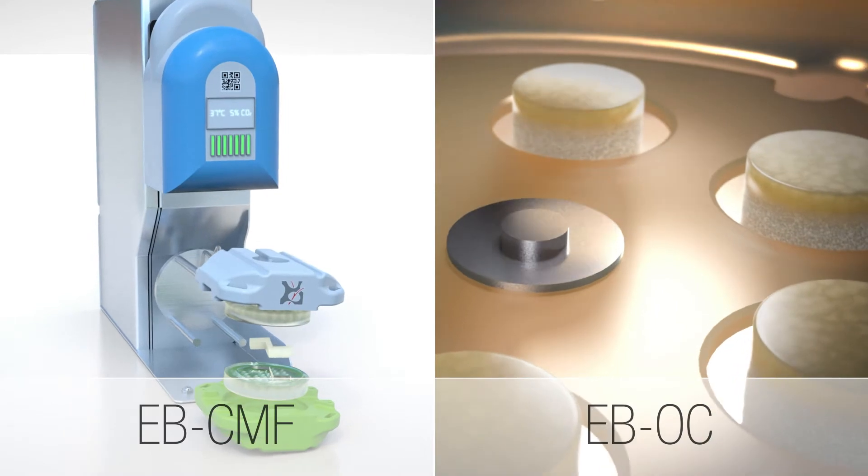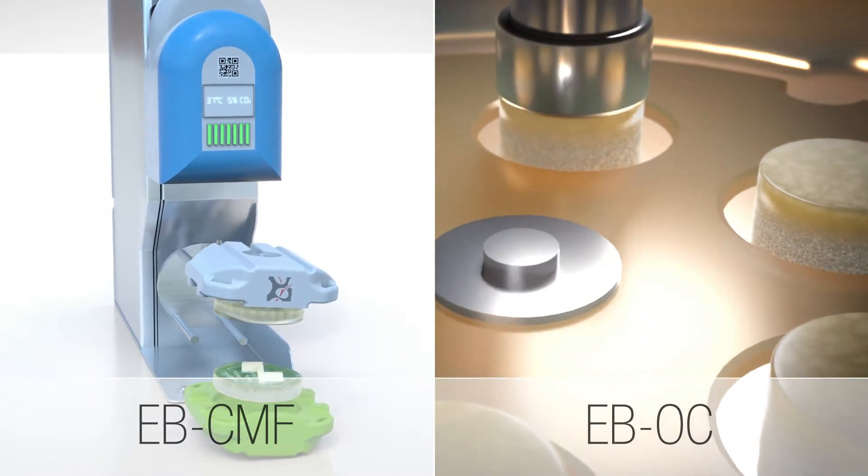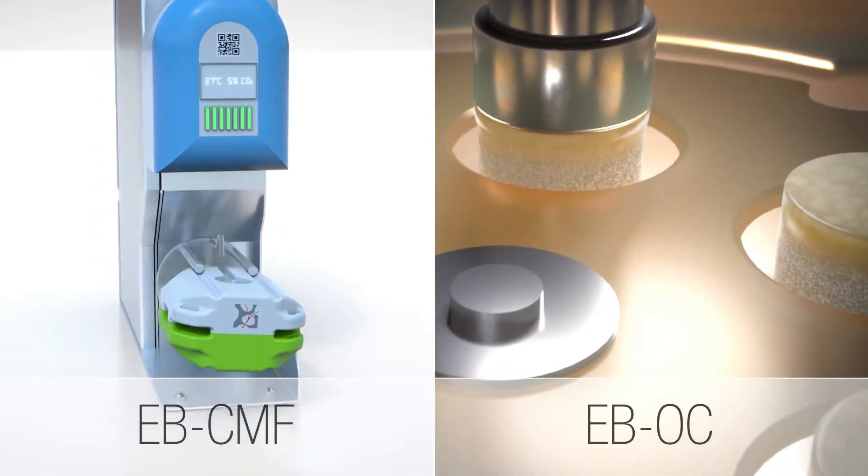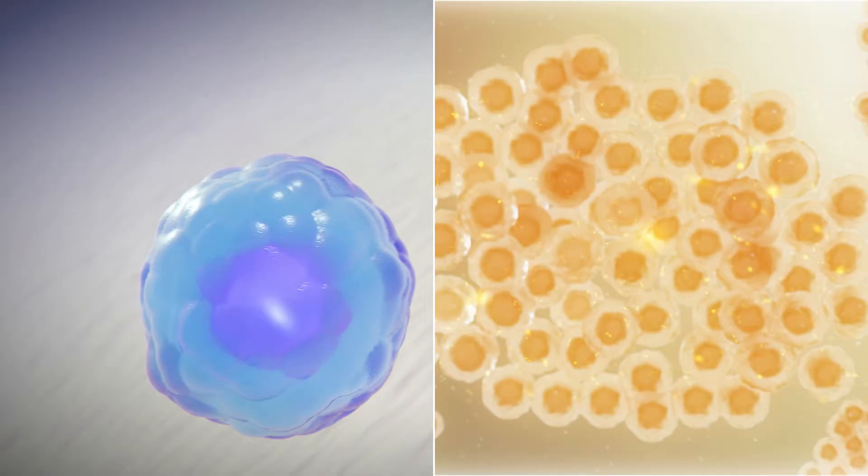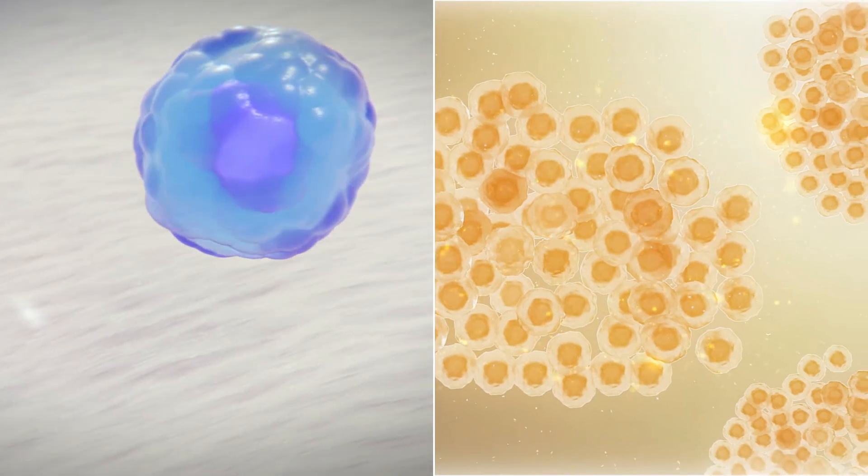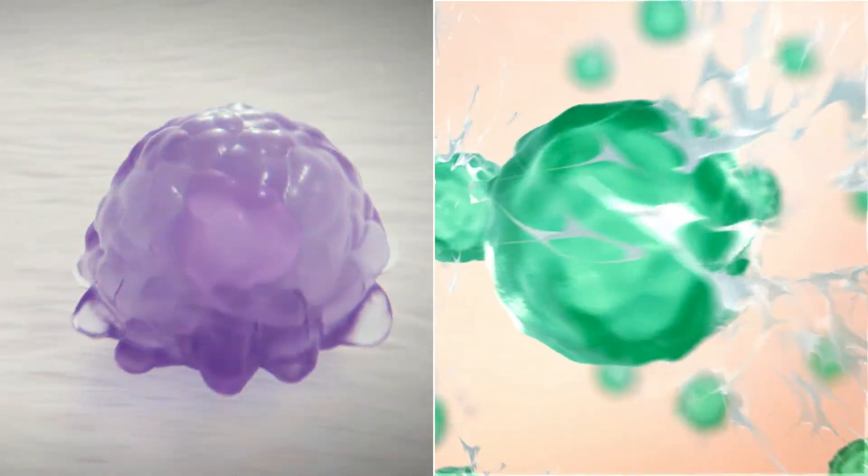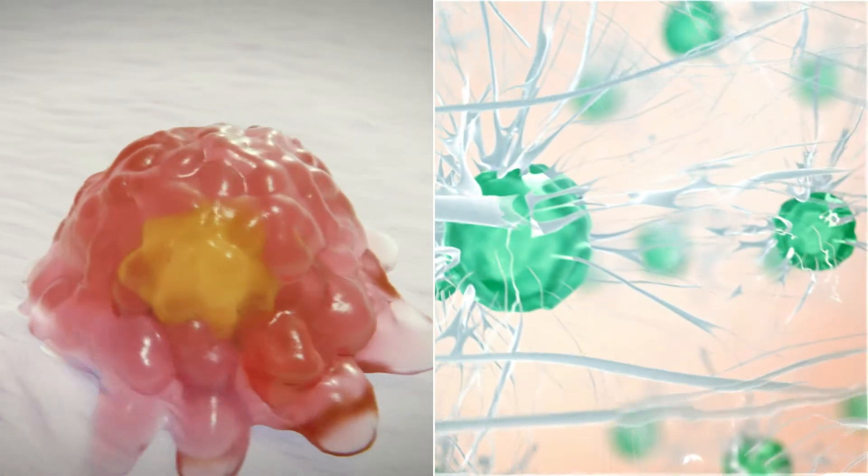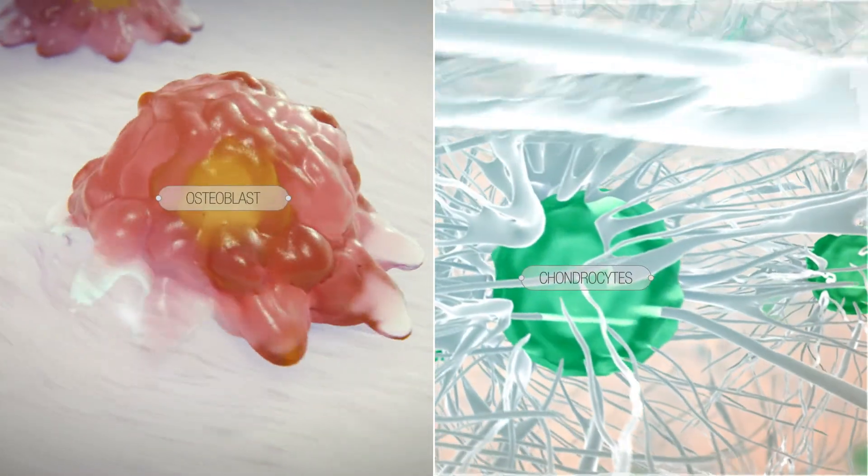Using our knowledge of biomimicry we employ cutting-edge engineering to recreate the natural conditions of the human body through the use of specific nutrients, temperature, growth factors and physical cues that allow stem cells to differentiate into the required cell types for more targeted and purposeful applications.